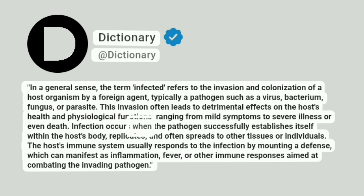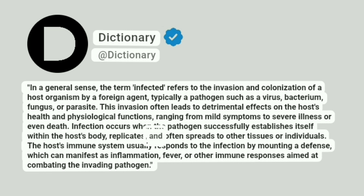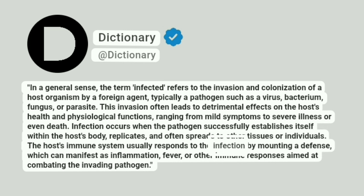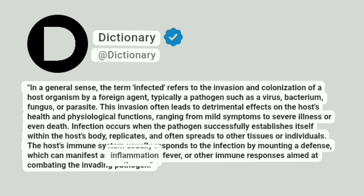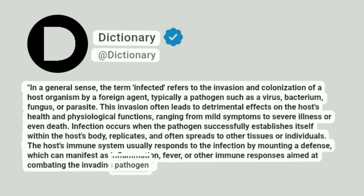Infection occurs when the pathogen successfully establishes itself within the host's body, replicates, and often spreads to other tissues or individuals. The host's immune system usually responds to the infection by mounting a defense, which can manifest as inflammation, fever, or other immune responses aimed at combating the invading pathogen.